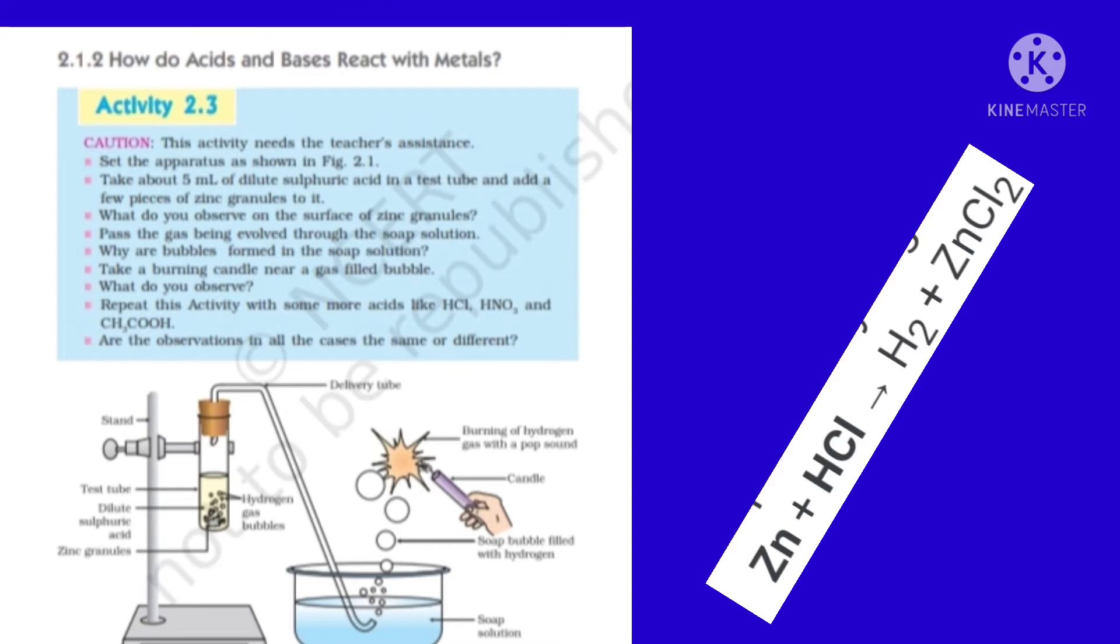We are going to see Activity 2.3, the reactivity of metal with acid. Here you are going to take a test tube in which you take zinc pieces or zinc granules. On adding sulfuric acid or hydrochloric acid to this test tube containing zinc, you can see bubble formation. The bubbles are nothing but hydrogen gas, and this hydrogen gas is allowed to pass into the soap solution contained in a trough.